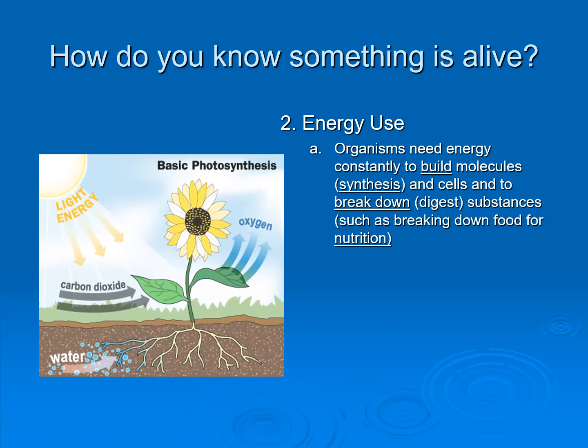All organisms need to be able to build molecules — synthesize them — to store energy and to make energy, and they need to be able to digest molecules, break them down, and use that energy. Some organisms can't really build their own sugars or energy molecules. Plants, we know, can make their own food through the process of photosynthesis — they take in light energy, carbon dioxide, water, and nitrogen, and they give off oxygen. In that process they make sugars: fructose, glucose, those things.